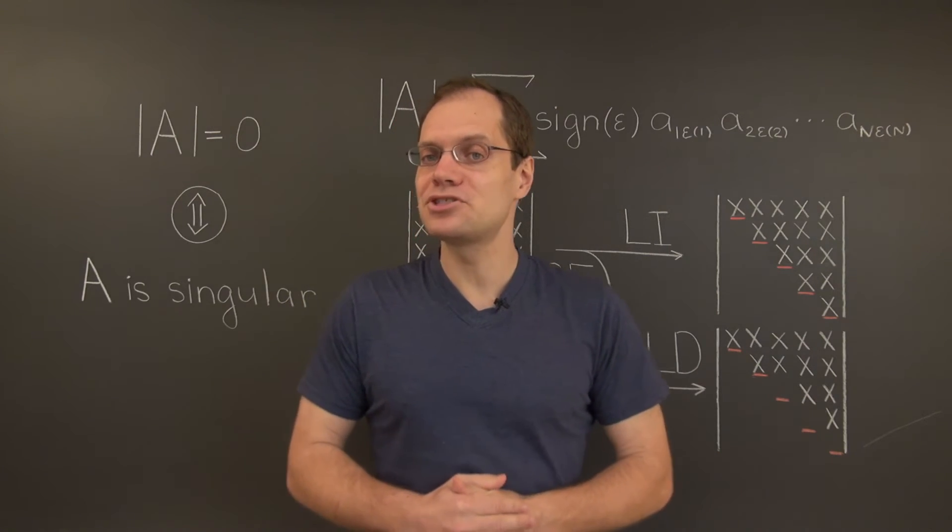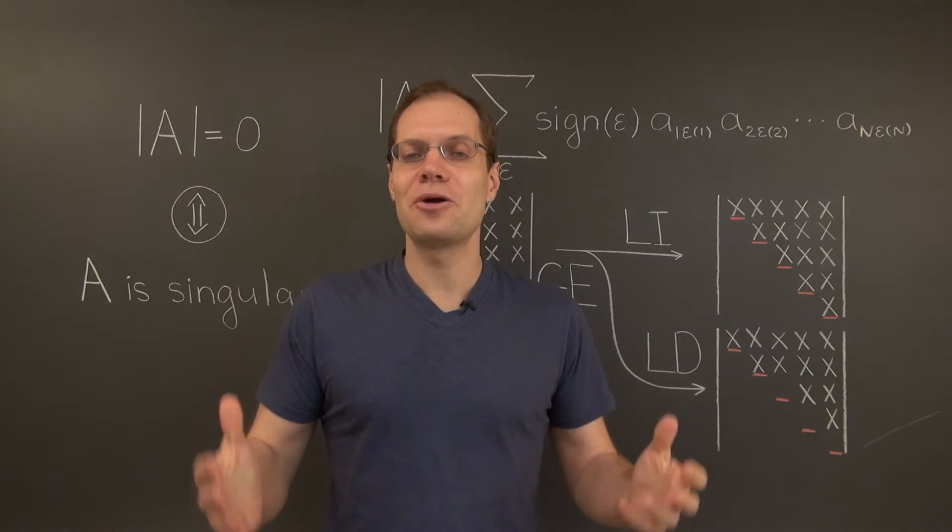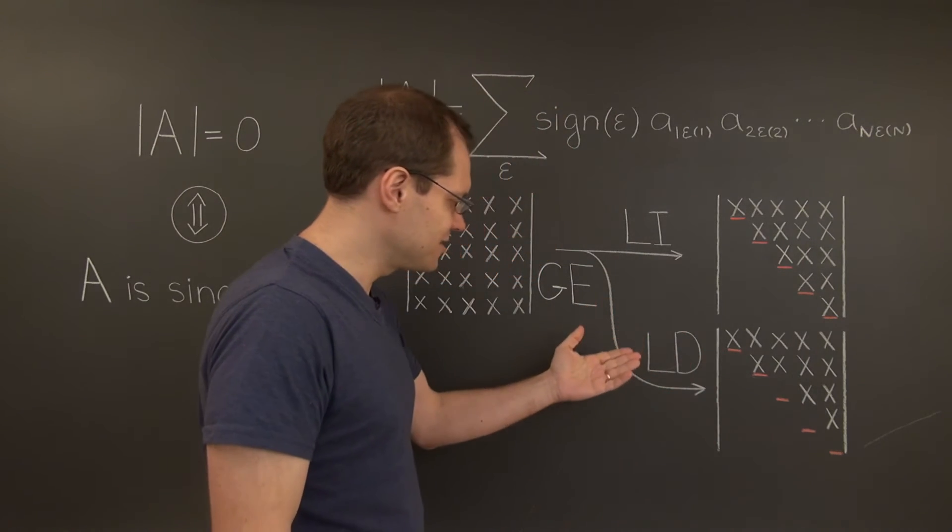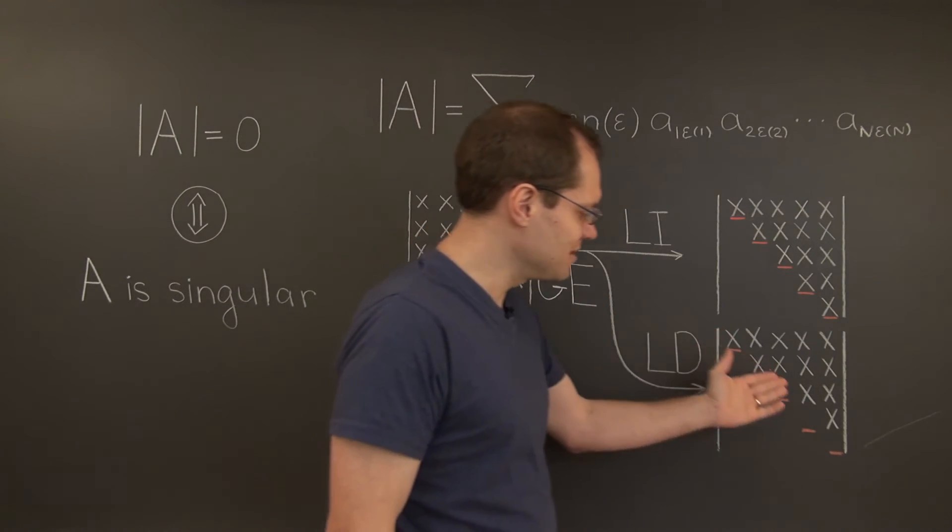And once again, because for an upper triangular matrix, the determinant equals the product of the diagonal entries, when the matrix is singular, the determinant is zero.